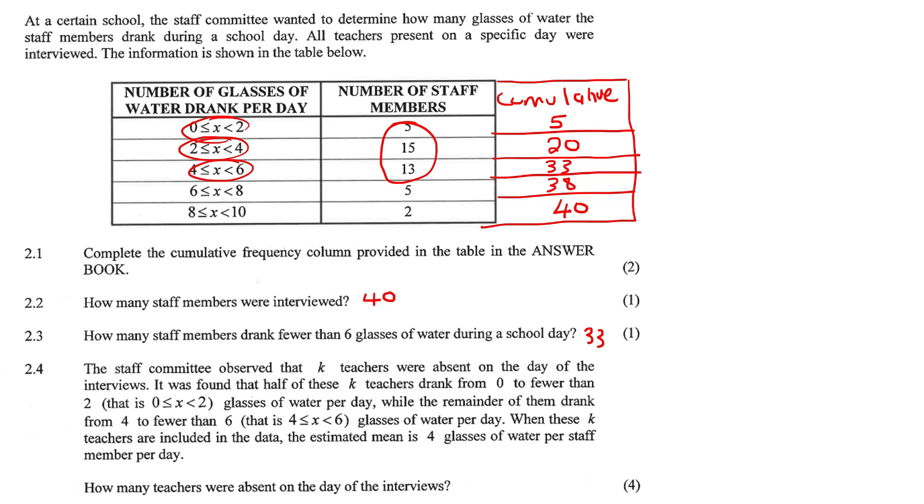The staff committee observes that K teachers were absent on the day of the interviews. It was found that half of these K teachers drank from zero to fewer than two glasses of water per day, while the remainder of them drank between four and six. Okay, so there were K teachers that were absent. Half of them are in this category, and the other half are in this category. When these K teachers are included, the estimated mean is four.